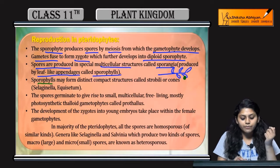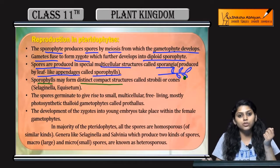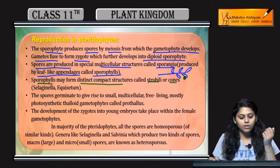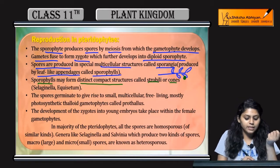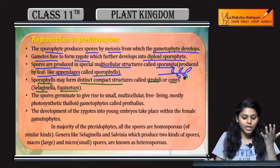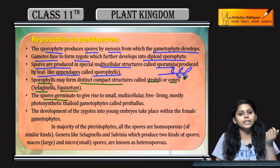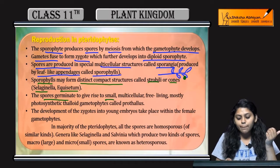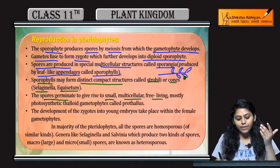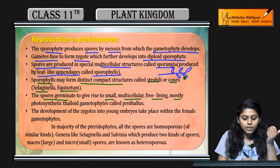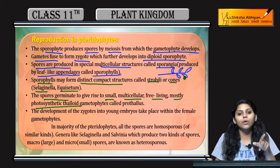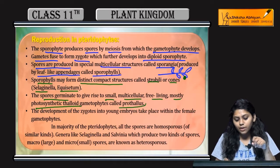These sporophylls, which are leaf-like appendages, can form distinct compact structures called strobili or cones, as in the case of Selaginella and Equisetum. Spores germinate and give rise to small, multicellular, free-living, and mostly photosynthetic thaloid gametophytes called prothallus.